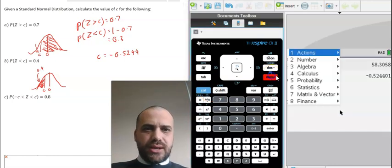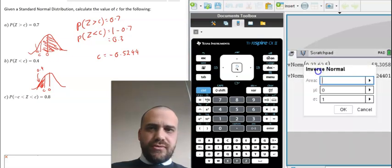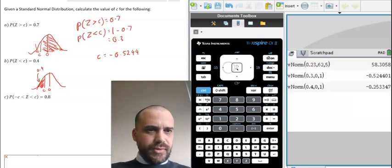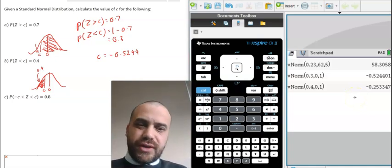So we just type it in menu, statistics, distributions, inverse normals, area is 0.4 and that number there is negative 0.2533.